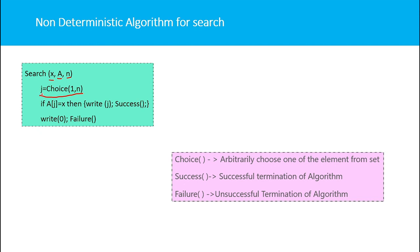The 'choice' procedure will return the index of the element to be searched. I then check: if A[j] equals x, I output j and call a procedure called 'success'. If A[j] does not equal x, I output zero and call a procedure called 'failure'. The choice procedure returns the correct index of the element to be searched — how it works internally, I don't know.